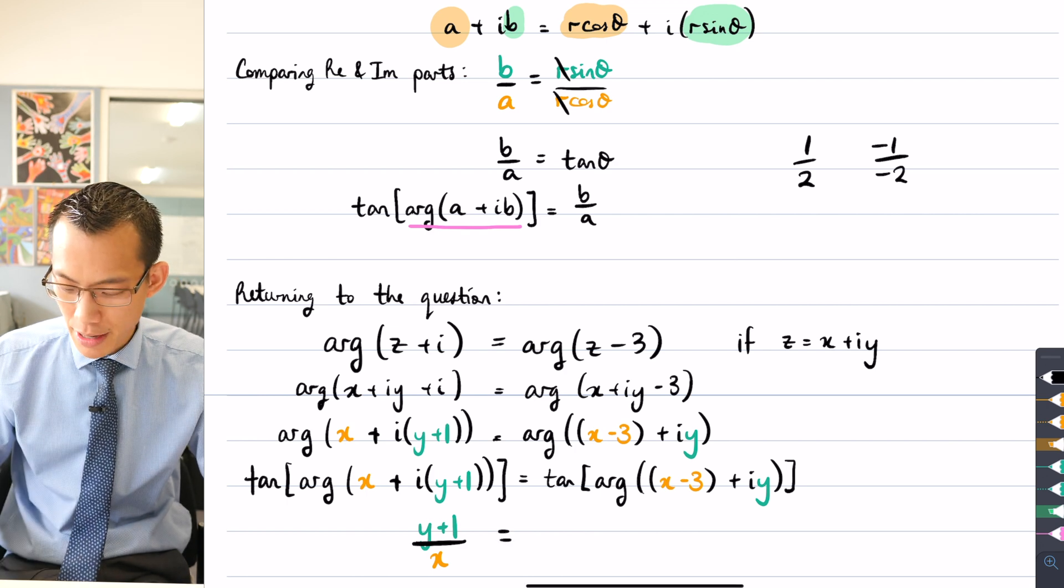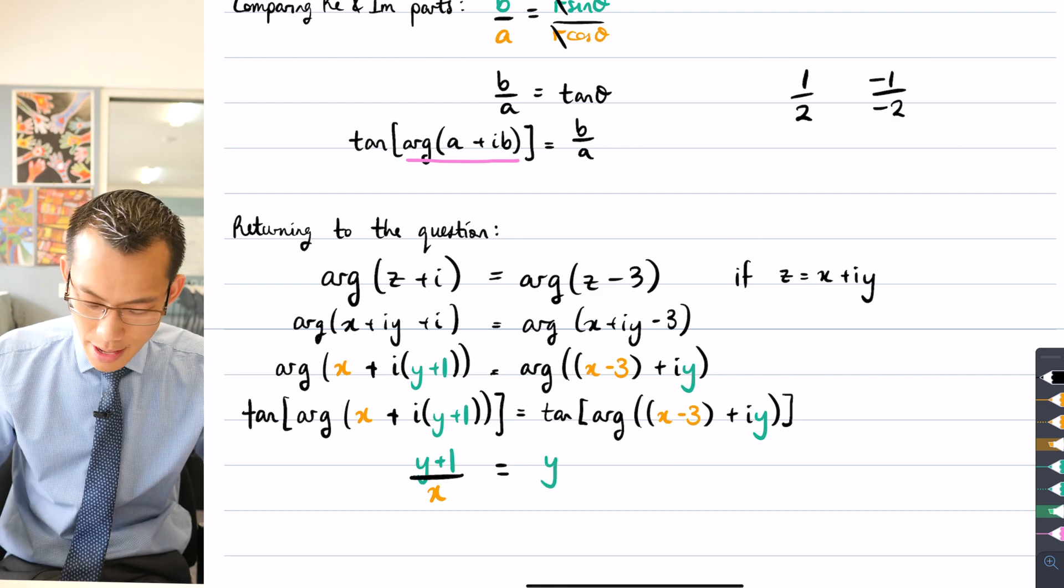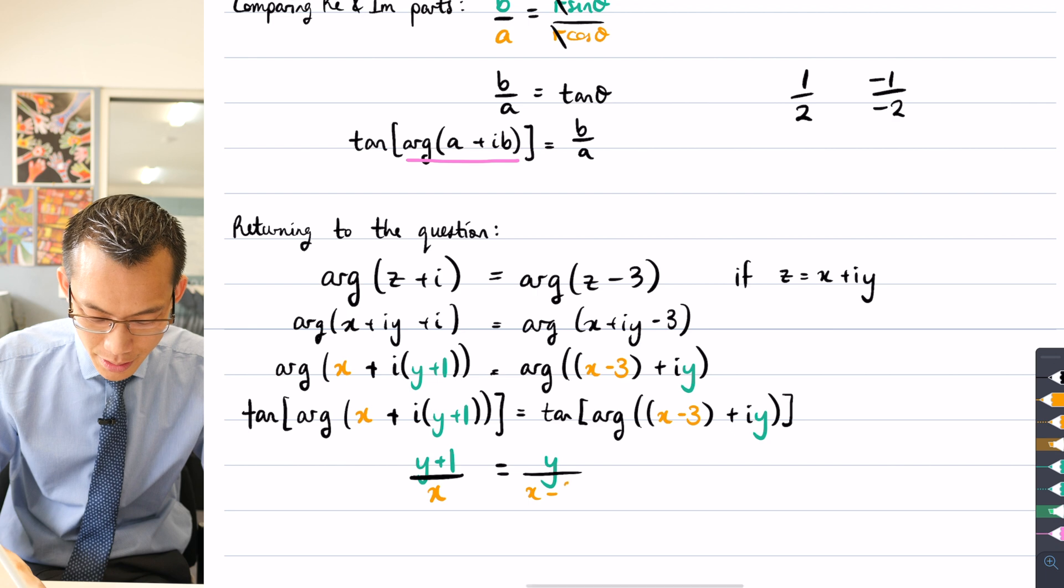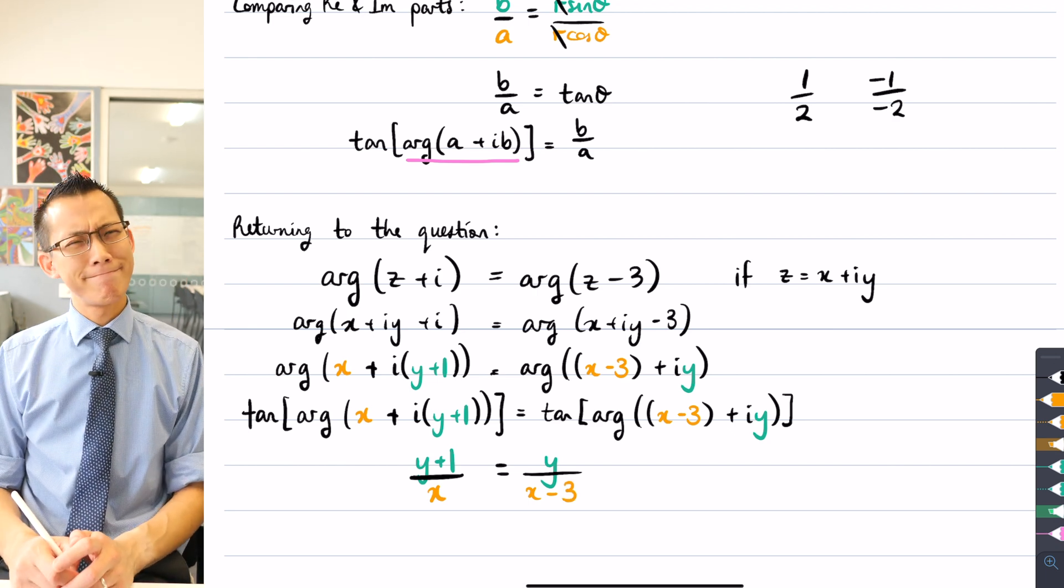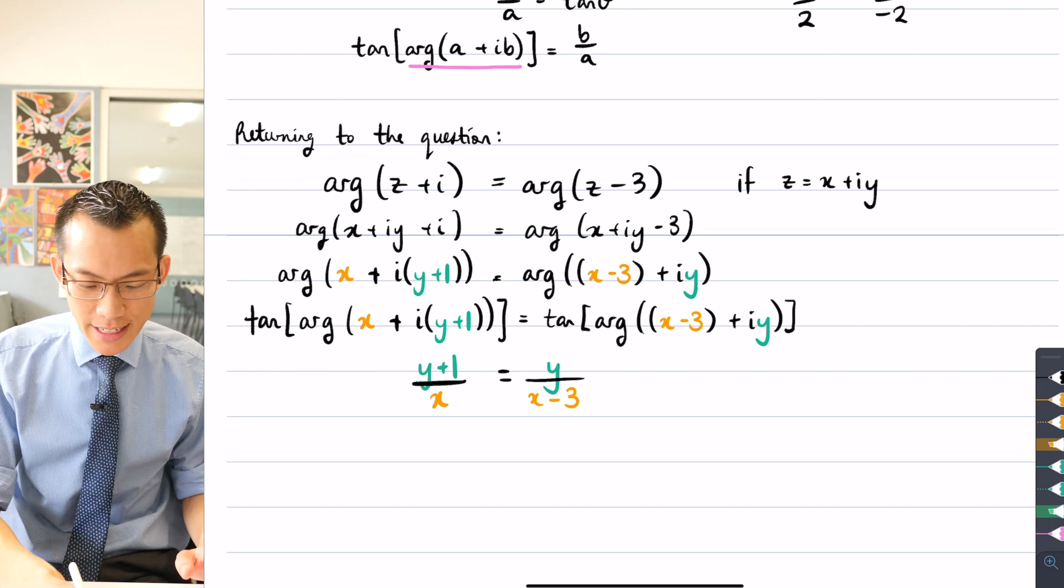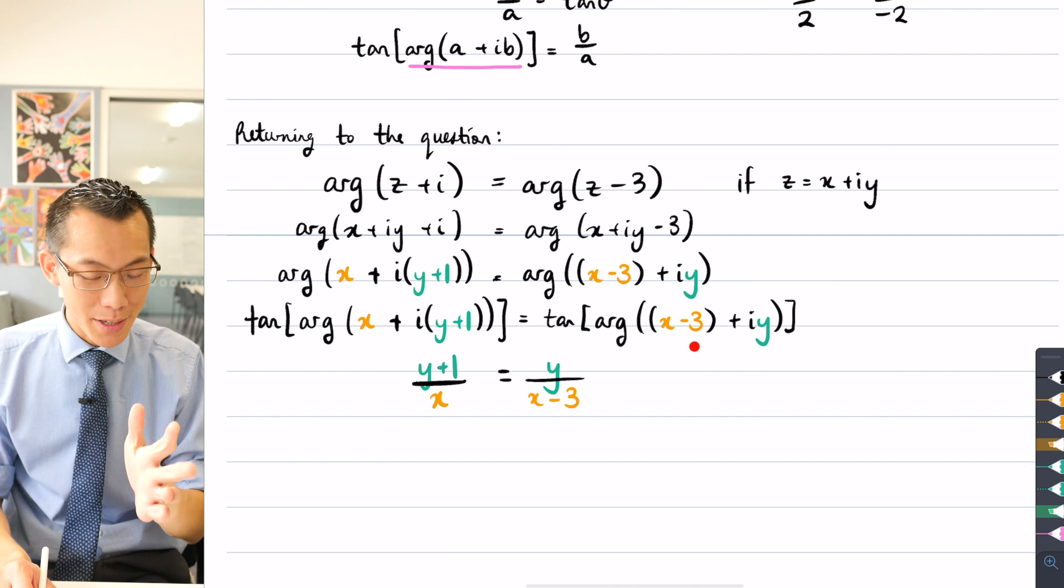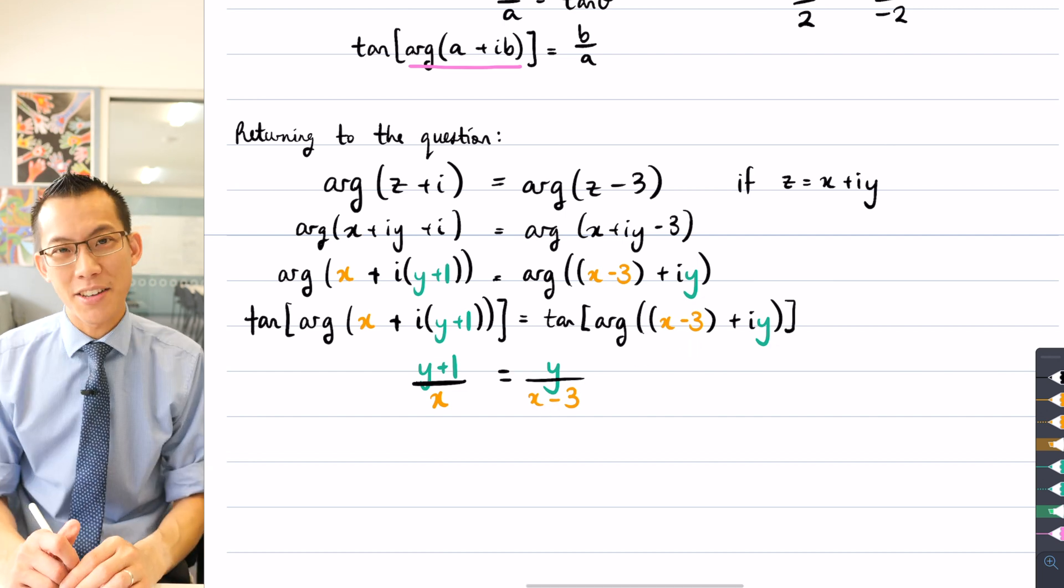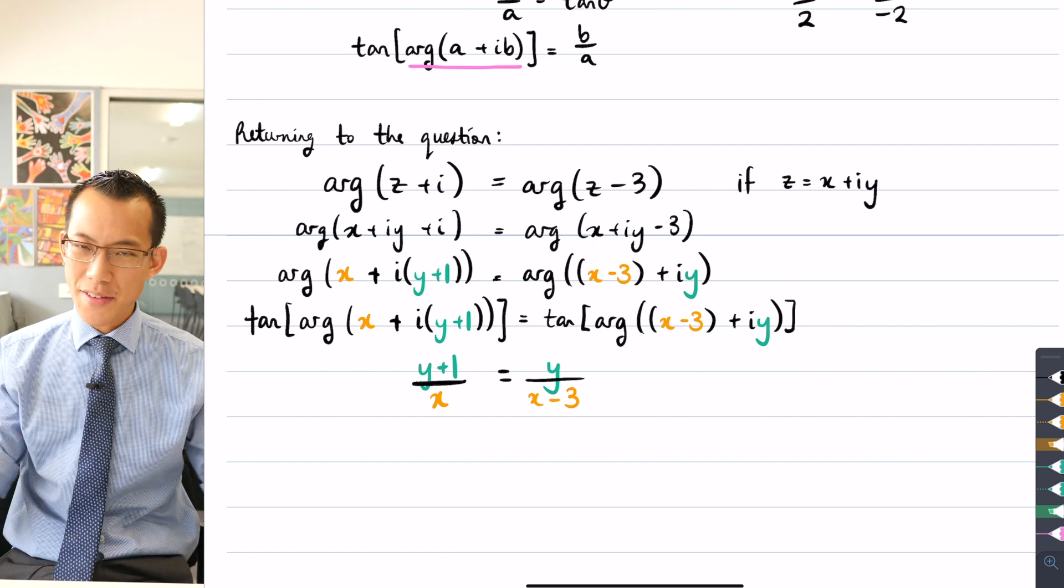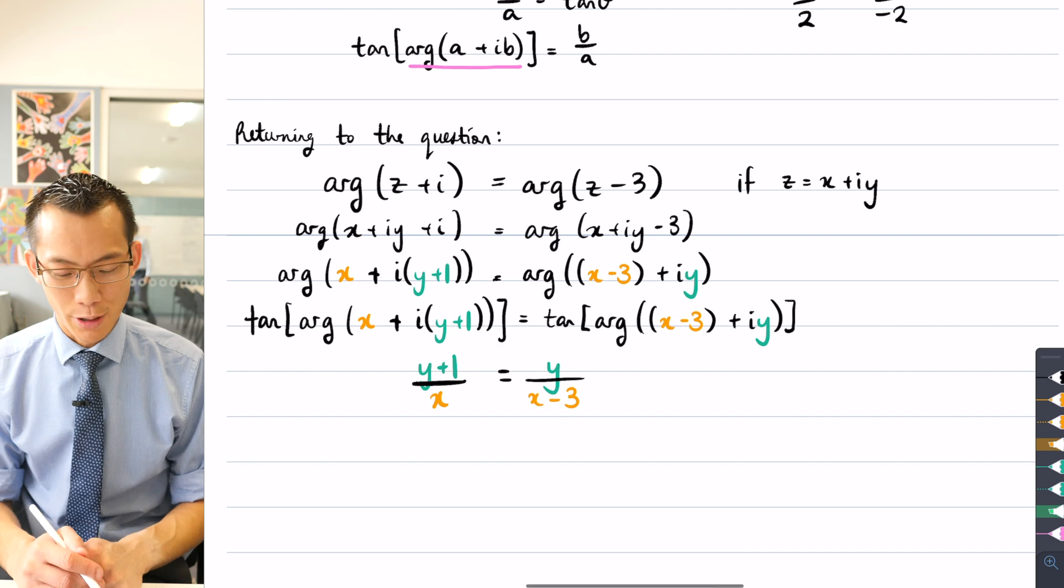What do I get on the right-hand side? Well, the imaginary component is just y. And then my real component will be x minus 3. So this is really good. From something that looked very intimidating and terrible before, you have made things worse, but then substantially made things better because now I have something that is all just x's and y's. There's not even any i's flying about. There's just some simple real numbers that I can deal with.